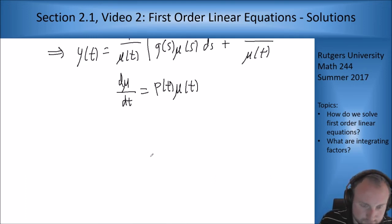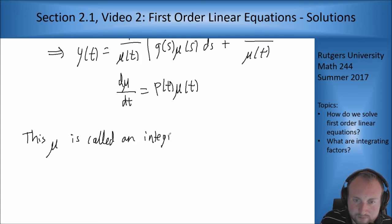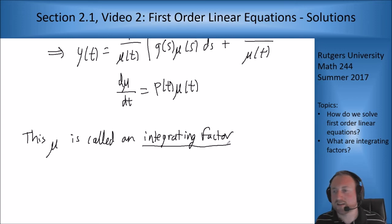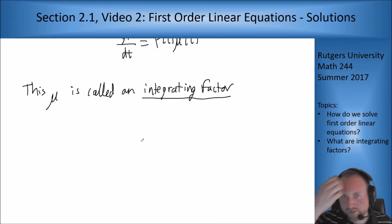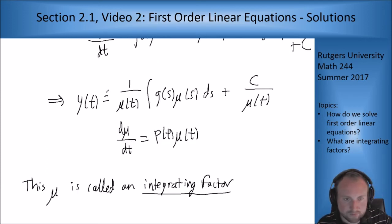So this mu is called an integrating factor. Why is it called that? Because I multiplied both sides by mu and then got something that I could just integrate. Once I multiplied both sides by mu because it solves a certain ODE, I got a derivative on the left hand side and then could just integrate both sides and be done with it. So that's how these problems sort of work. You find your integrating factor as in something that solves this equation here, and then you can solve your original ODE just by plugging that in. Multiply both sides by mu, simplify the left hand side, and go from there.